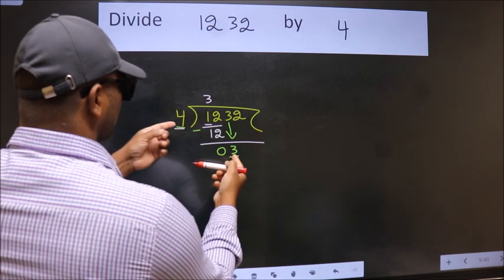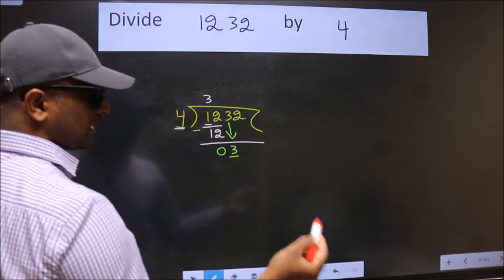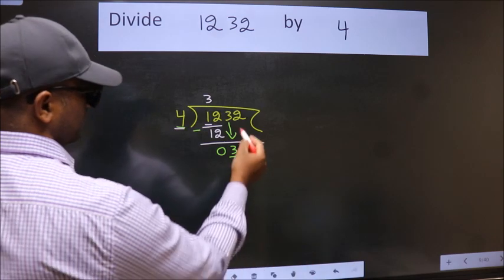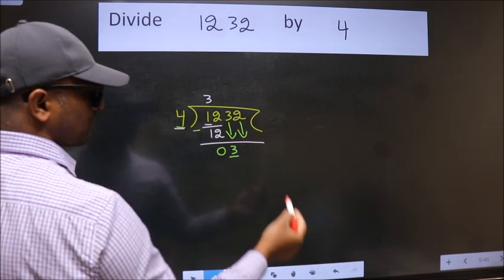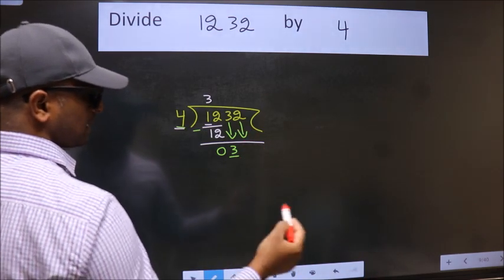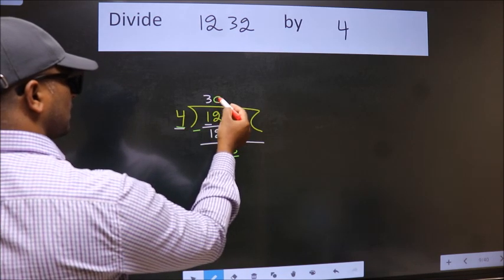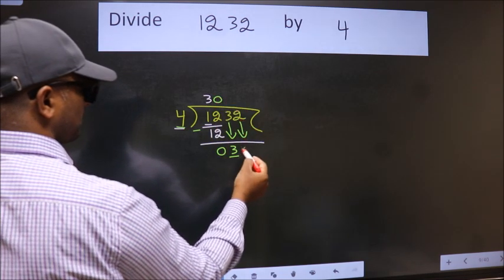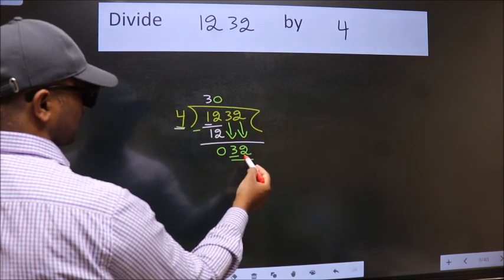3 is smaller than 4, so we should bring down the second number. And the rule to bring down the second number is put 0 here. Then only we can bring this number down. So, 32.